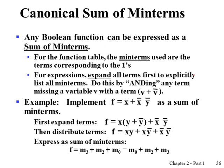Canonical form has two forms. One is called the sum of minterms, and the other is called the product of maxterms. The sum of minterms as a canonical form means expressing a function using all necessary minterms which make the function one in the truth table.